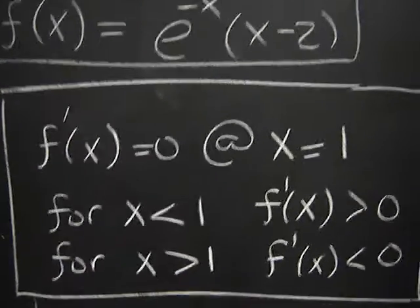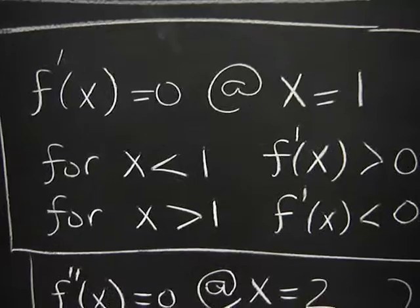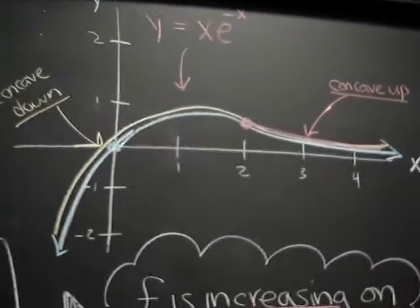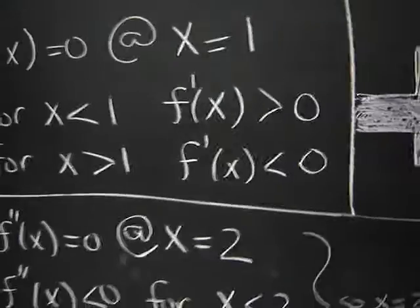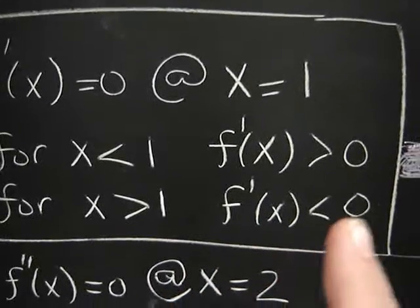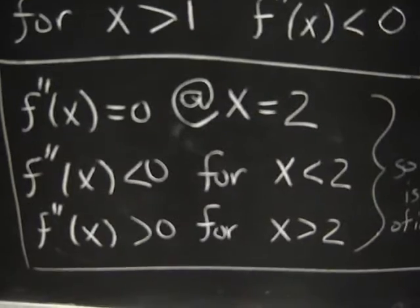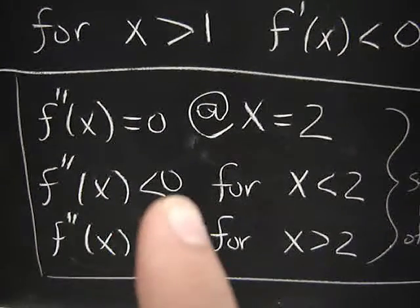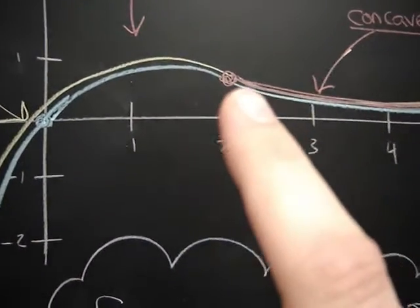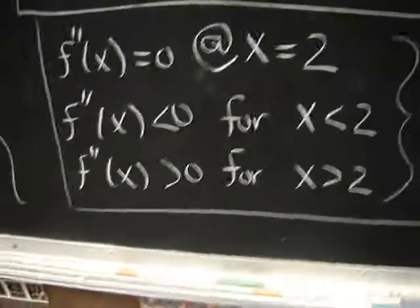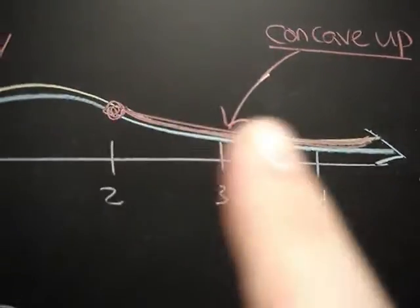When is the first derivative equal to zero? That happens at x = 1. For all x less than 1, the first derivative is greater than zero, so we would expect the curve to be increasing until it gets to 1 — and that's exactly what we see. For all x greater than 1, the first derivative is less than zero, and that implies the decreasing that we just saw. For the second derivative, when does it equal zero? At x = 2. The second derivative is less than zero when x is less than 2, so we would expect it to be concave down, and that's exactly what we see. It's concave down until it gets to 2, and then the bendedness changes. Then the second derivative is greater than zero for x greater than 2, so we would expect it to become concave up — and that's exactly what happens.